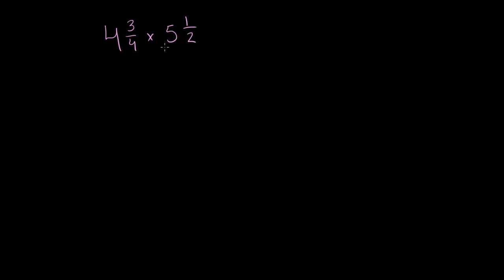Let's multiply 4 and 3 fourths times 5 and 1 half. To do this, I like to turn each of these mixed numbers into improper fractions. Remember, an improper fraction is a fraction where the numerator is greater than or equal to the denominator. So let's do that.